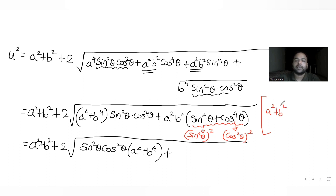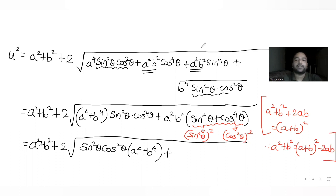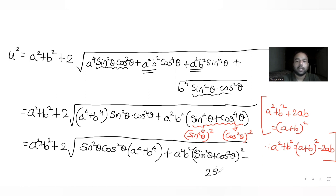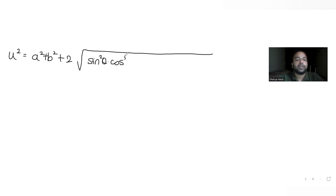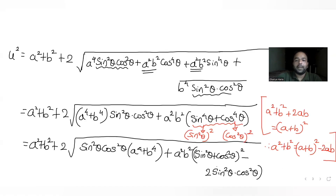Since a square plus b square plus 2ab equals (a plus b) the whole square, I can write a square plus b square as (a plus b) whole square minus 2ab. So if I try to write sin square theta plus cos square theta — taking a as sin square theta and b as cos square theta — then sin square theta plus cos square theta the whole square minus 2 times sin square theta into cos square theta gives this entire expression inside the root. So u square becomes a square plus b square plus two times root of sin square theta cos square theta multiplied with (a raise to four plus b raise to four plus a square b square).